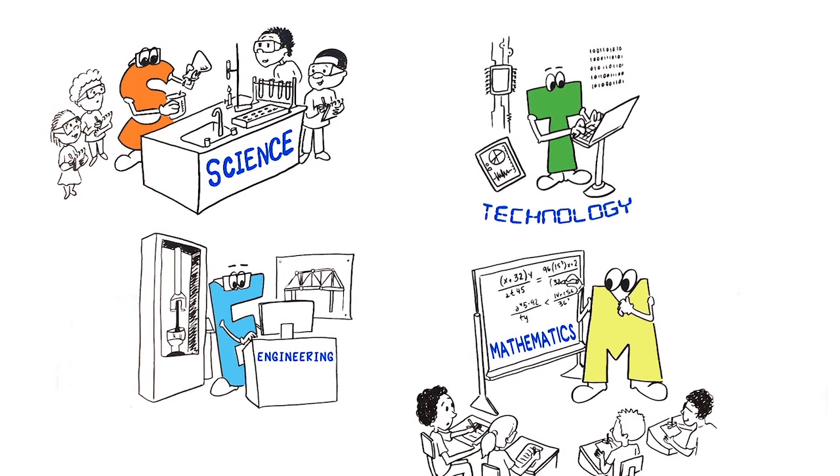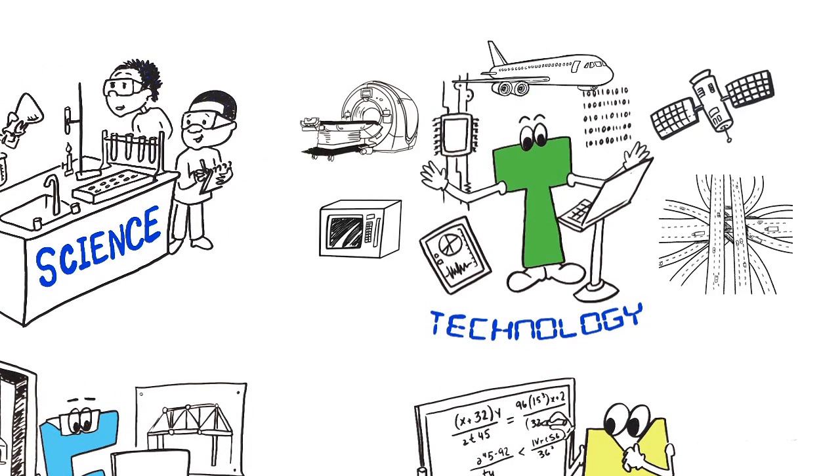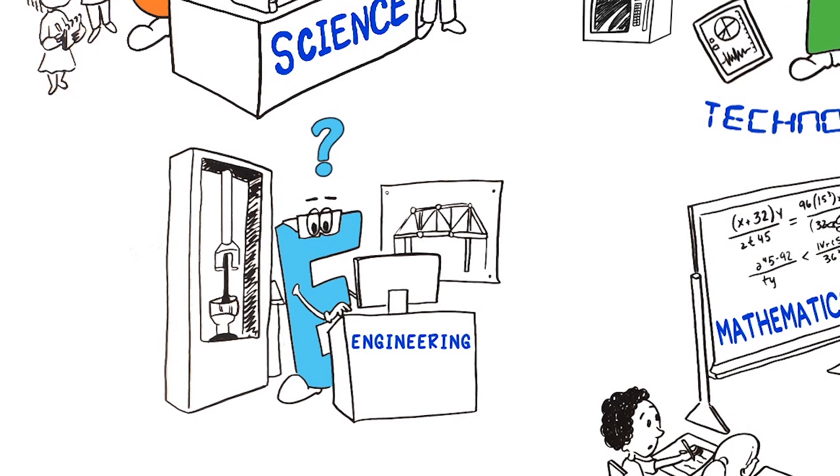Comparatively little attention has been paid to the T, the products and systems that meet human needs, and E, the creative process used to design these things.